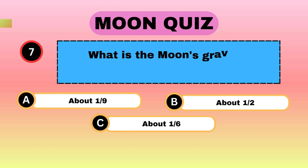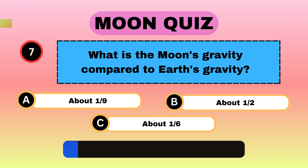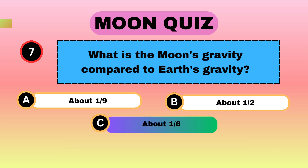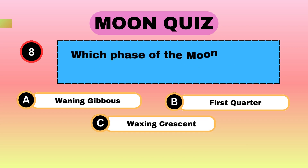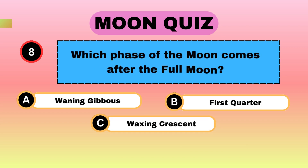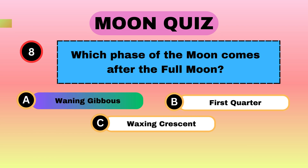What is the Moon's gravity compared to Earth's gravity? About 1.6. Which phase of the Moon comes after the full Moon? Waning gibbous.